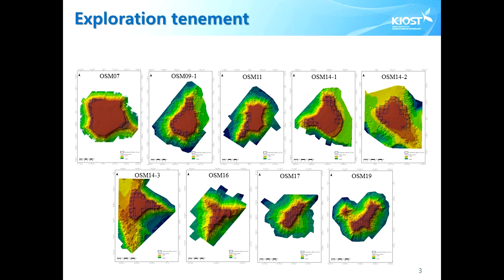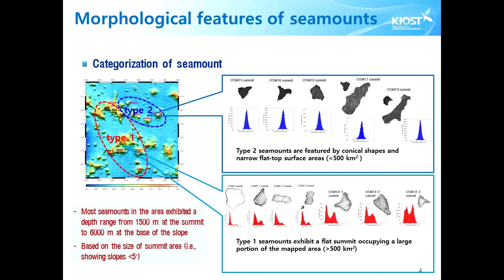Most of the blocks are located along the brim of the seamount. Most seamounts in the study area show depth ranges from 1,500 m at the summit to 6,000 m at the base of the slope. Based on the size of the summit areas — roughly distinguished by a slope less than 5 degrees — we can characterize the 13 seamounts into type 1 and type 2 seamounts. Type 1 seamounts display a flat summit occupying a large portion of the mapped areas, which is over 500 sq km.